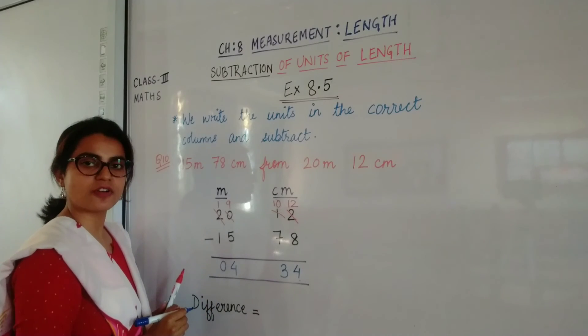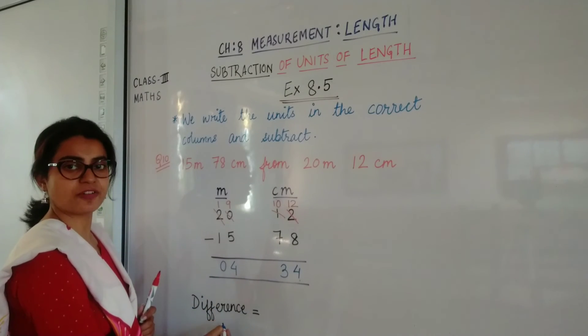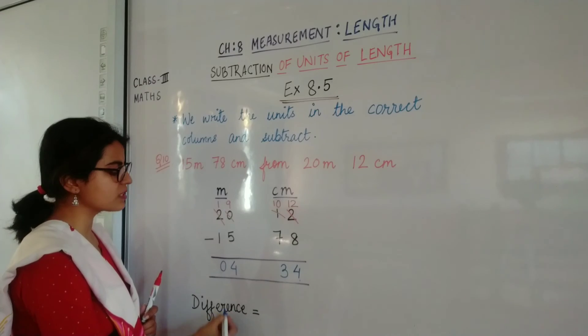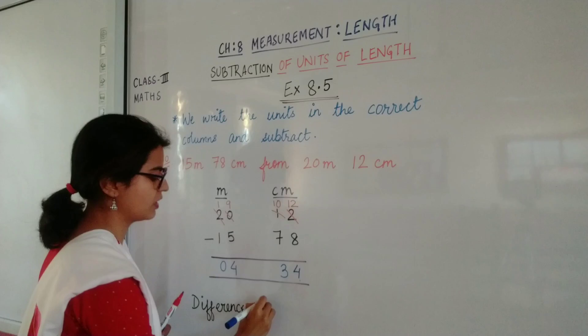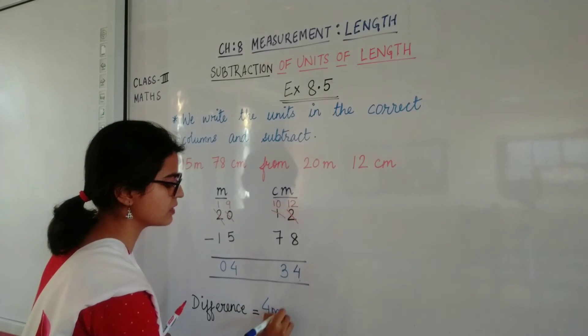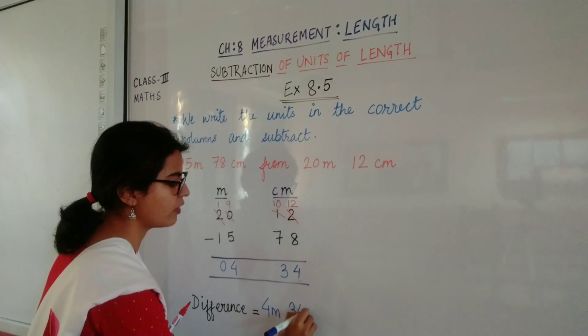So what is the answer for subtraction? It is the difference. So children, what is the difference? The difference is 4 meters 34 centimeters. We write here 4 meters and 34 centimeters.